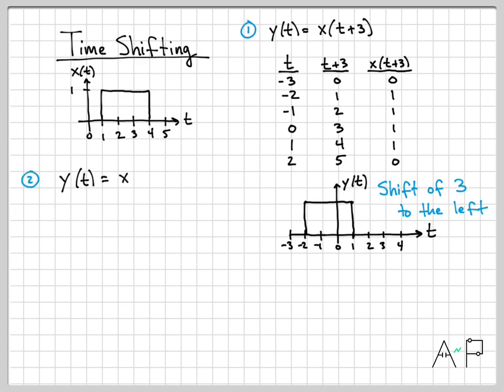All right. Let's do another example. And let's go the other way. Let's let y of t equal x of t minus 2. And we can do the exact same thing. We'll go through this just a little faster, though, because we've done this already. So I'm going to let my initial time vector equal 1, 2, 3, 4, 5, 6, 7.